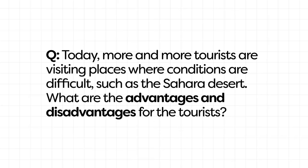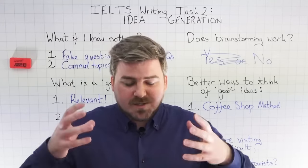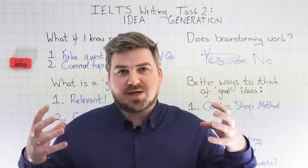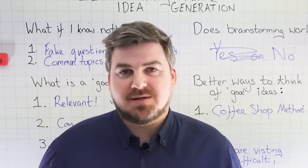Here's a question: today, more and more tourists are visiting places where conditions are difficult, such as the Sahara Desert. What are the advantages and disadvantages for the tourists? This is a real question from Cambridge 12, and it's a very typical question. It's not difficult to understand, but when students see this, they overcomplicate everything — they make it more complex than it really needs to be.